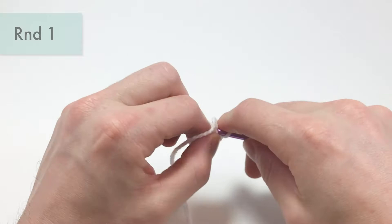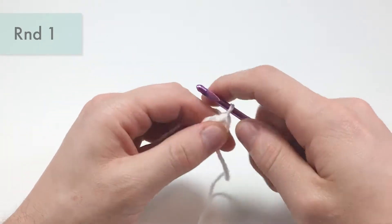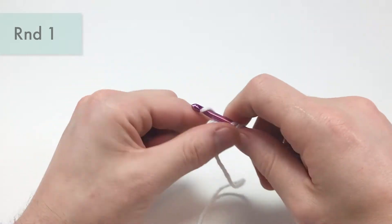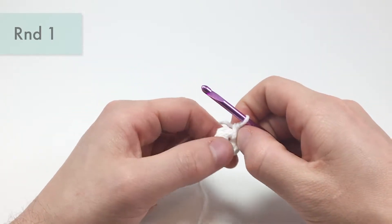And this pattern is going to be worked in the round, meaning that we won't be turning for the entire time. One, two, three, four, five, and six. That'll be the end of round one.